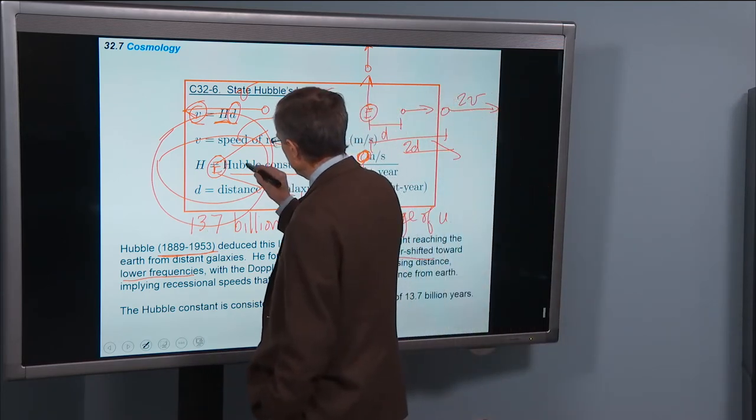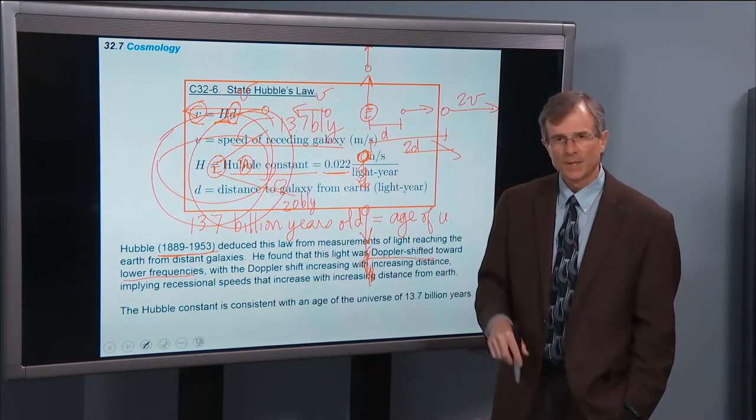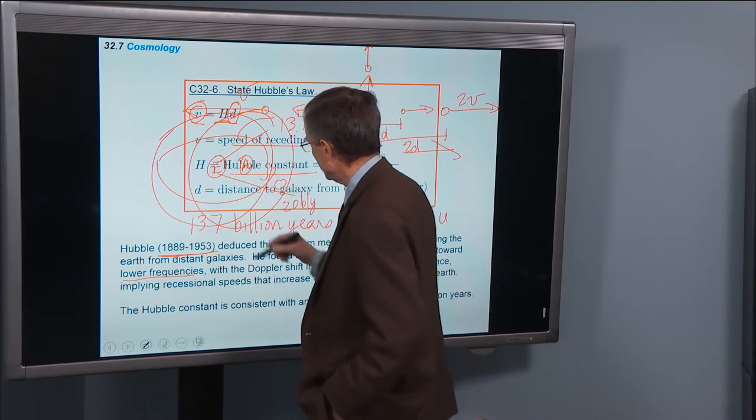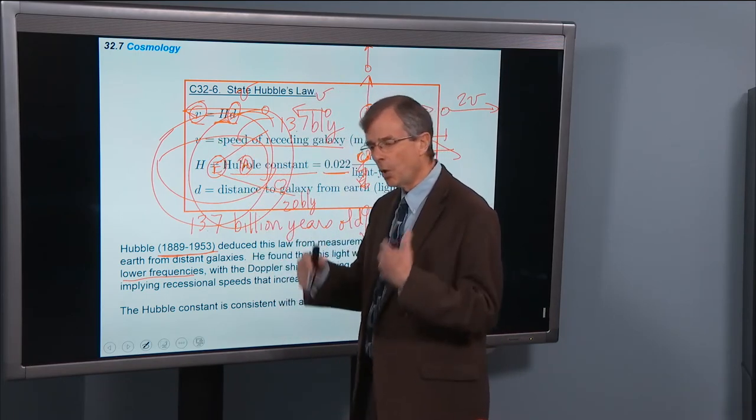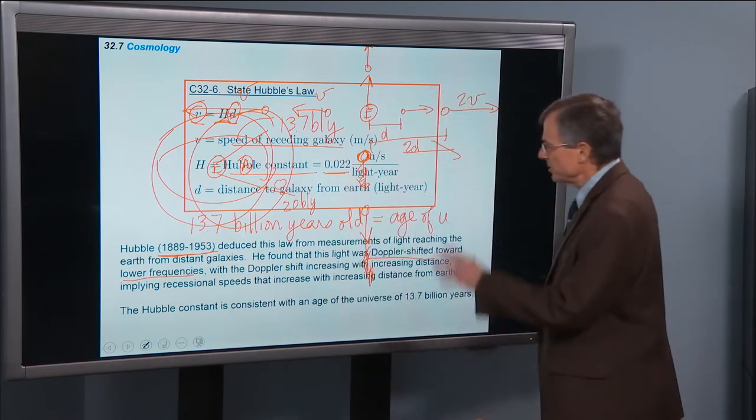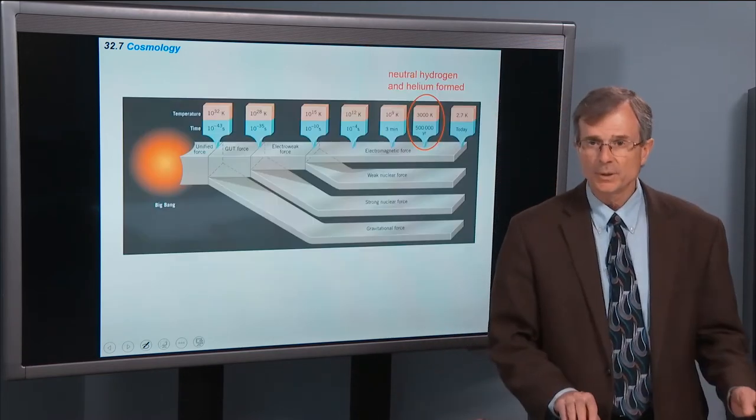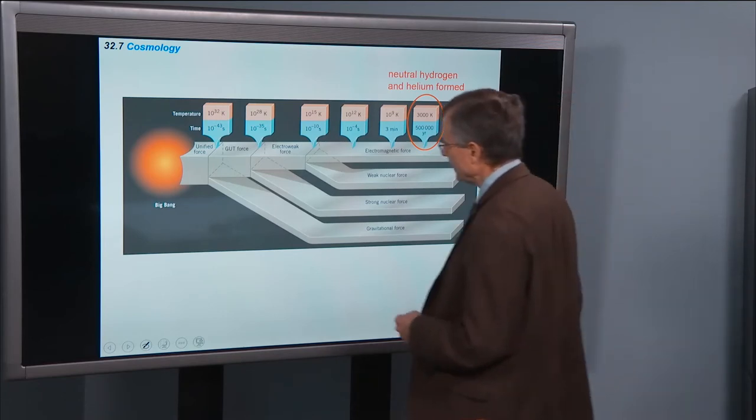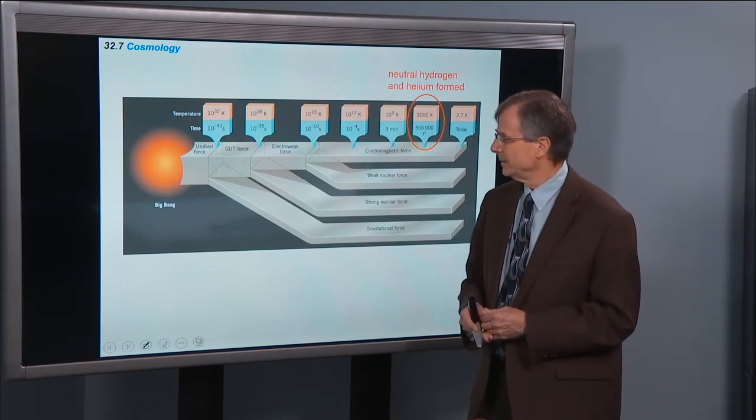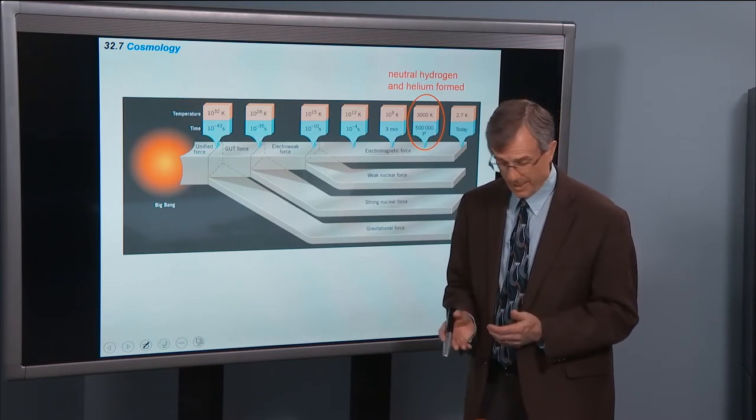So if you're here at the Andromeda Galaxy, instead of being at the Earth, your observable universe will overlap from your perspective at the Andromeda Galaxy with the observable universe from Earth. And everyone in the universe will have his own unique observable universe. So that's the Hubble, and it's consistent with an age of the universe of 13.7 billion light years. So the universe is expanding. That is irrefutable that the universe is expanding. Too many measurements to deny that.